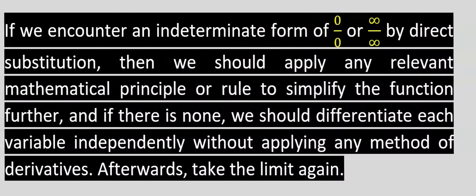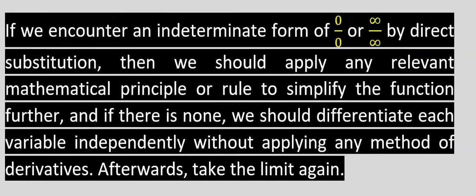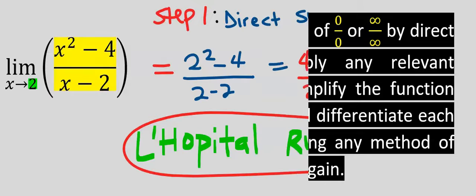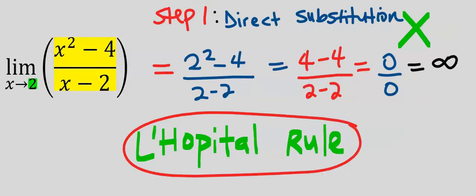This is the condition when we can apply L'Hôpital's rule: if we encounter an indeterminate form of 0 over 0, or infinity over infinity, by direct substitution. Then we should apply any relevant mathematical principle or rule to simplify the function further. And if there is none, we should differentiate each variable independently, without applying any method of derivatives. Afterwards, we take the limit again — that is, we move to step 2.